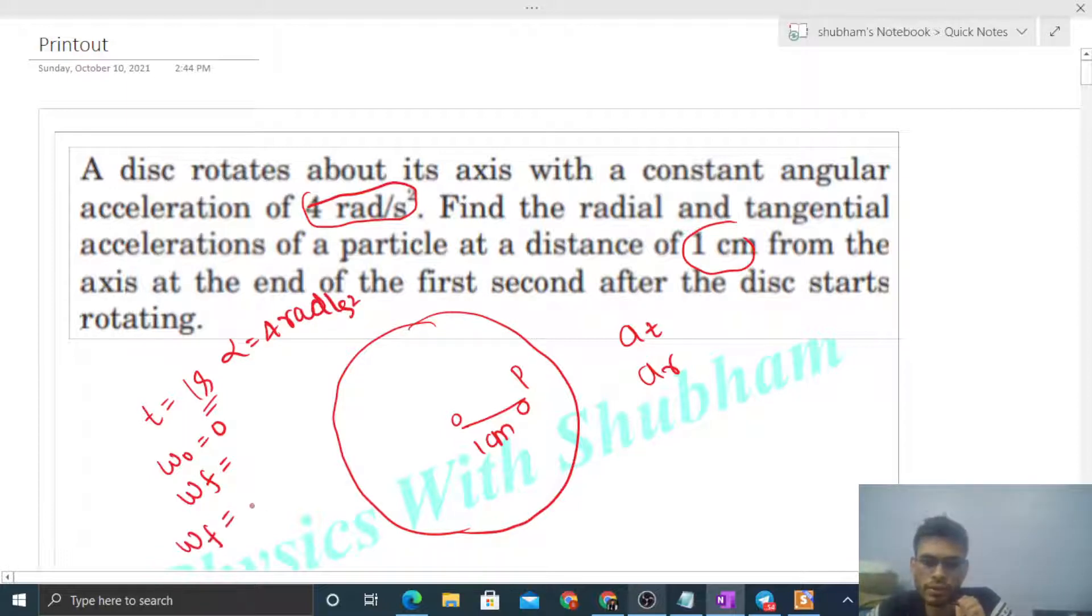So final angular velocity will be initial angular velocity plus alpha into t. So you can see omega 0 is 0, alpha into t that is 4 radian per second, right?